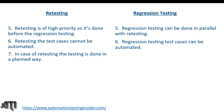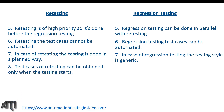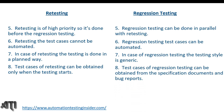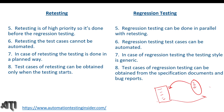Retesting test cases cannot be automated, whereas regression test cases can be automated. In retesting, testing is done in a planned way; in regression testing, the testing style is generic. Test cases for retesting can only be obtained when testing starts; test cases for regression testing can be obtained from specification documents and bug reports. In regression testing, whenever a particular module is deployed, we pick relevant test cases, add them to the regression suite, and execute them for the next deployment.